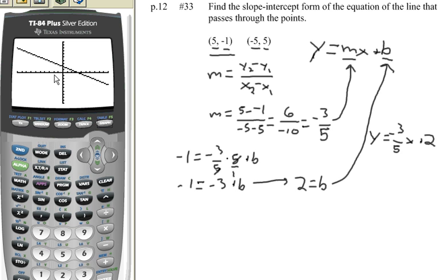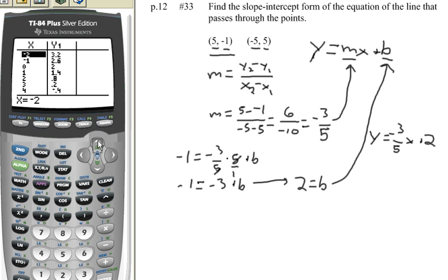5, negative 1, negative 5, 5. It appears that those points are on the line. I can see for sure by pressing second graph and seeing a table of values. This gives me a table of x and y values. I can see negative 5, 5 is on that line. And I can also see that 5, negative 1 is on that line. So I'm guaranteed that I've got the right answer.